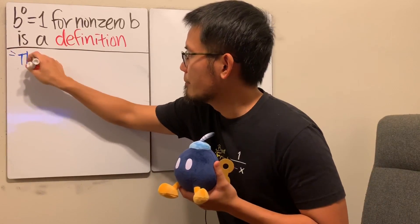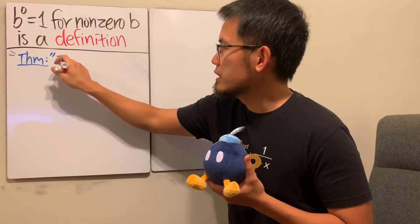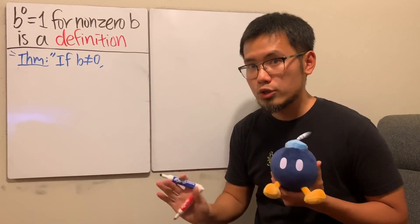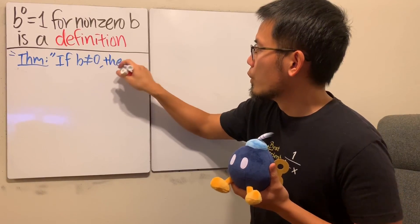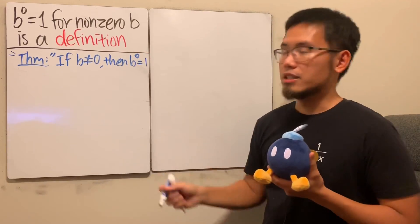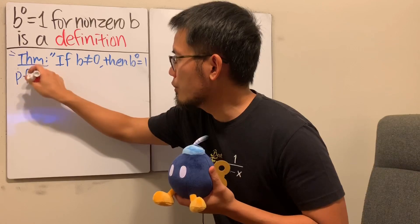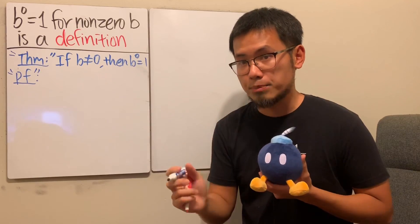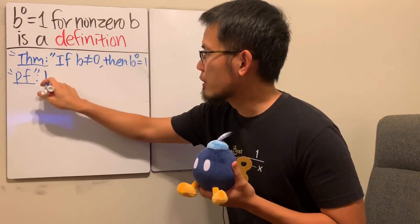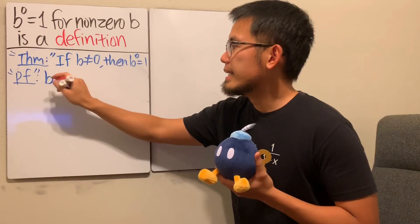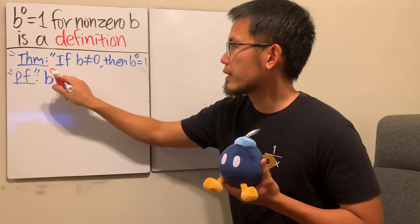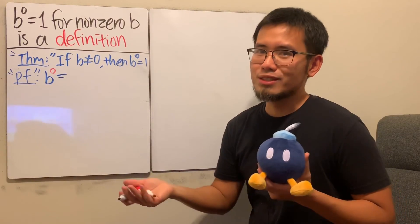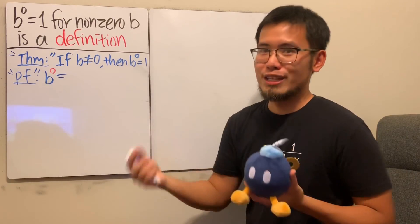Let me put down a 'theorem' in quotation marks: if b is not equal to zero, then b to the zero power is equal to one. This is how the typical 'proof' in quotation marks will go. We're talking about the zero exponent, so let's focus on b which is non-zero, raised to the zero power. One way to produce zero in the exponent is to take one number and subtract it from itself.